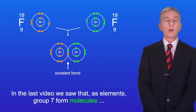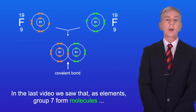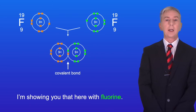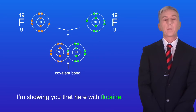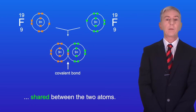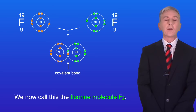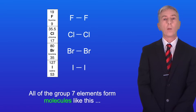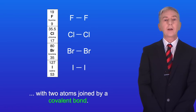In the last video we saw that as elements, Group 7 form molecules with two atoms joined by a covalent bond, and I'm showing you that here with fluorine. The covalent bond is the pair of electrons shared between the two atoms. We now call this the fluorine molecule F2. All of the Group 7 elements form molecules like this with two atoms joined by a covalent bond.